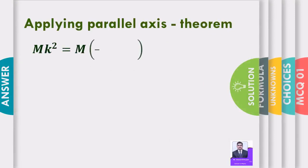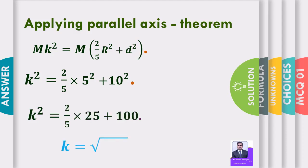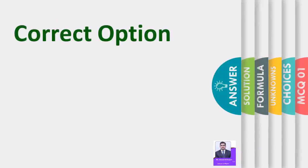Applying the parallel axis theorem: m k squared equals m into 2 by 5 r squared plus d squared. So k squared equals 2 by 5 into 5 squared plus 10 squared, which gives k squared equals 2 by 5 into 25 plus 100. Therefore k equals root 110 centimeter.